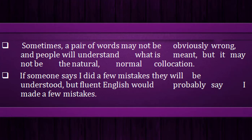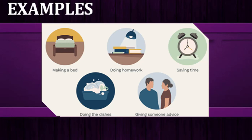Some English students or speakers use incorrect collocations without realizing it. Here are some examples of correct collocations: making a bed, doing homework, saving time, doing the dishes, and giving someone advice. Further examples include: 'a fast train,' 'fast food,' 'a quick shower,' 'a quick meal.' However, 'a quick train' or 'a fast shower' would not be natural collocations. Similarly, we say 'a heavy smoker' — not 'a strong smoker' or 'a big smoker.' For illness, we say 'a serious illness,' not 'a strong illness.' And 'I made a mistake' is correct, while 'I did a mistake' is incorrect.